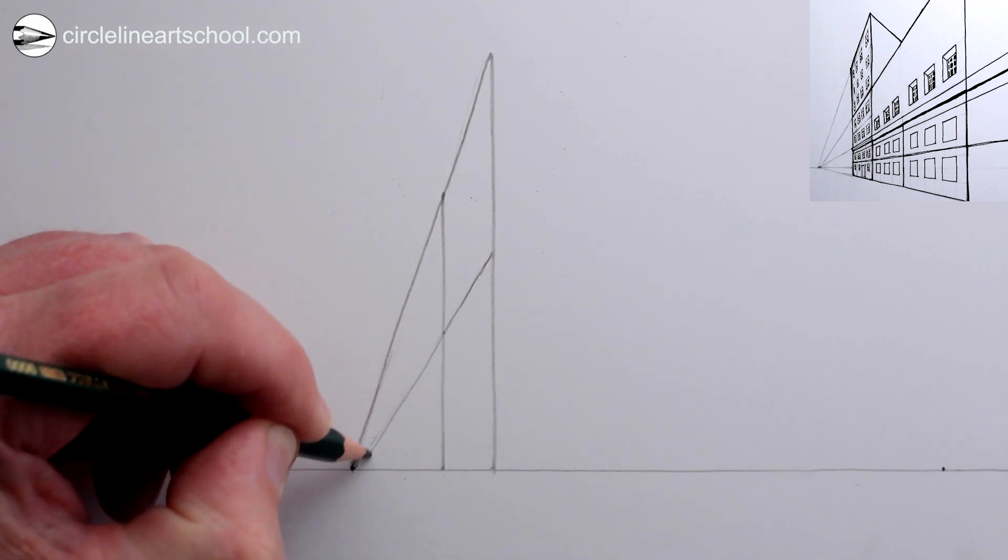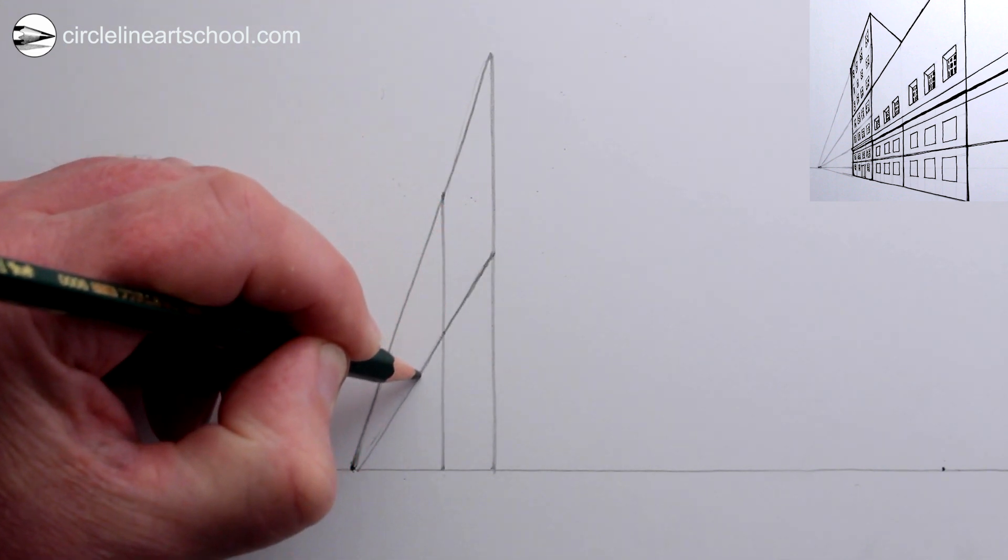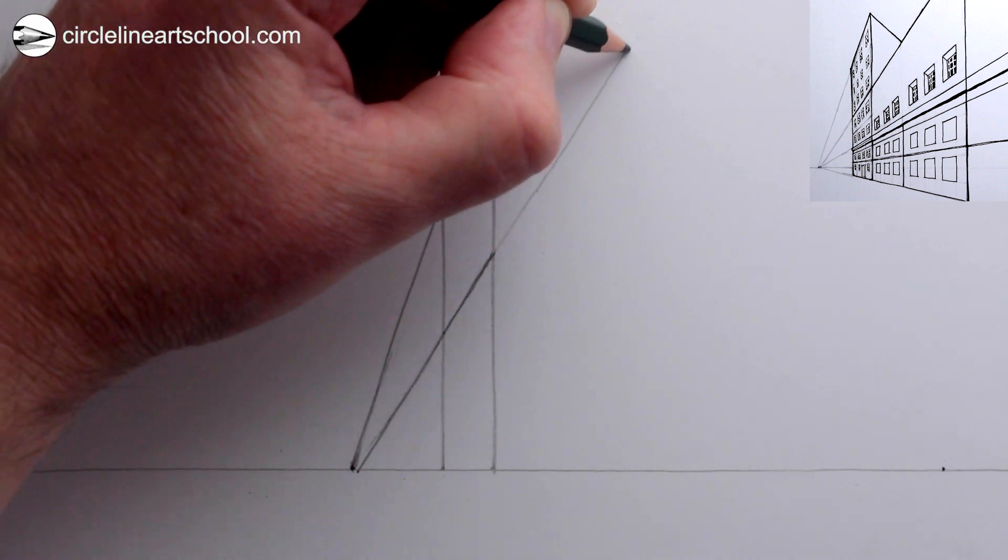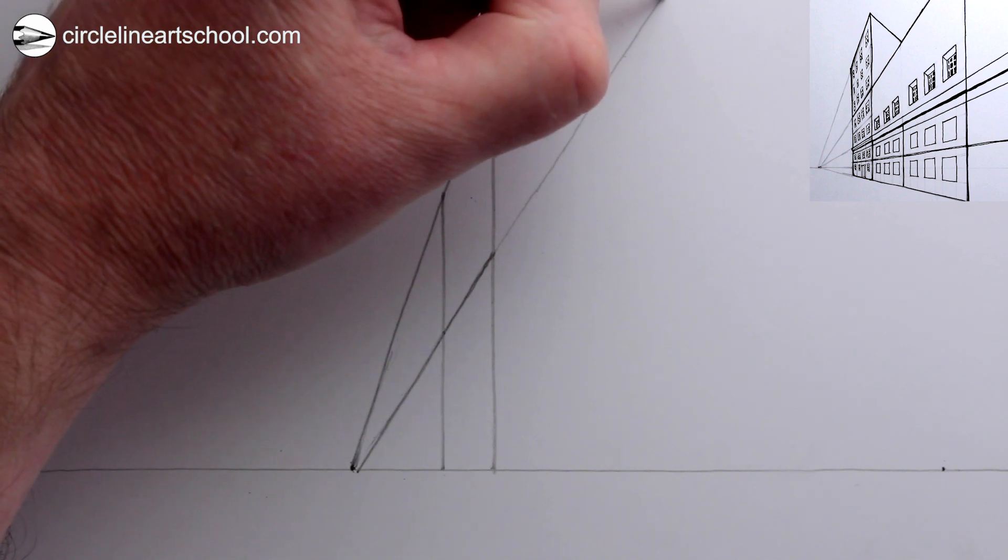Now we could draw a series of lines from the vanishing point in the center going towards the right. These lines represent the various floors of the building.